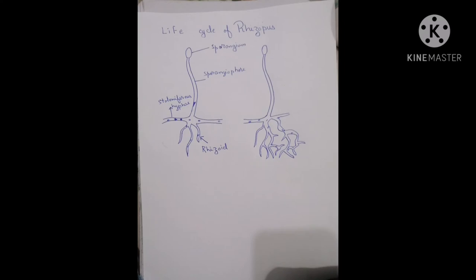The body of fungus consists of hyphae. Hyphae moving along the surface is known as stoloniferous hyphae, while the hyphae which is moving under the surface is known as rhizoid.